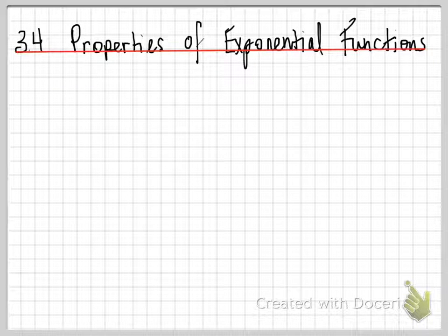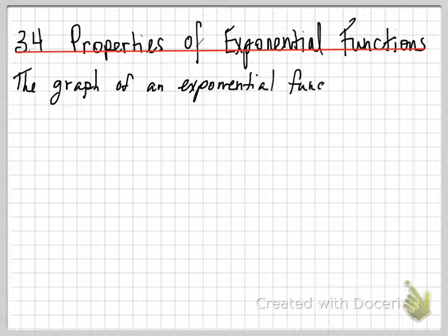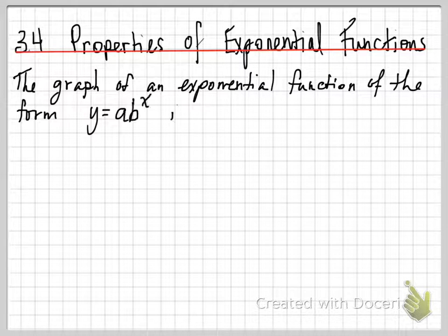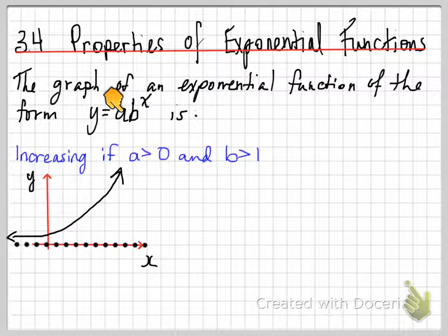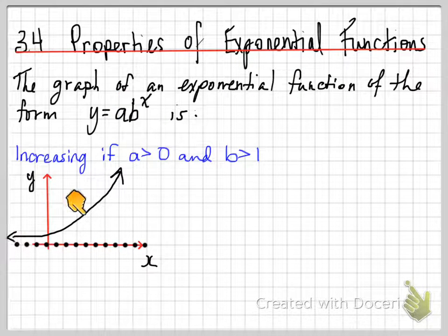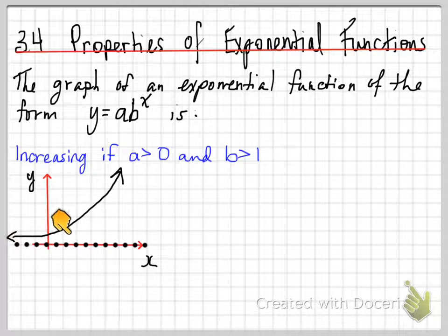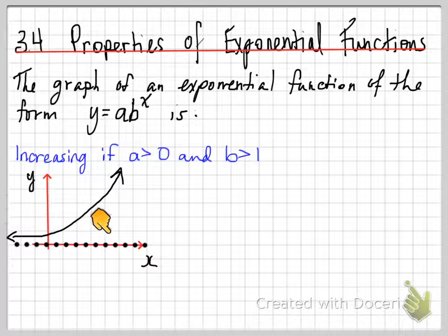3.4 Properties of Exponential Functions. The graph of an exponential function of the form y equals a times b to the x is increasing if the a value is greater than 0 and the b value is greater than 1. So the base is bigger than 1 and a is a positive number. If that's the case, we're going to look at a graph that increases from left to right — as x gets larger, so do the y values. That means it's an increasing function.